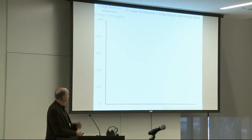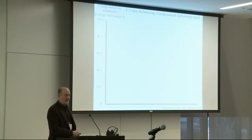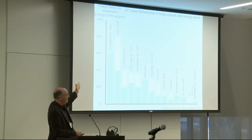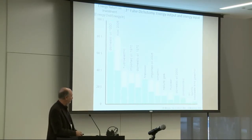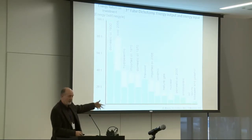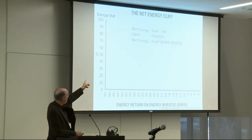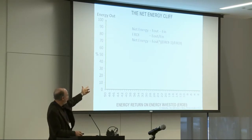The third false dichotomy is energy output versus energy input. There's a popular measure called the energy return on investment — simply energy output over energy input. Data for different energy technologies shows that domestic U.S. oil in 1930 had an energy return on investment of about 100: it was very easy to get your hands on that energy. The technologies we're looking to as the future have a way lower energy return on investment. Net energy is defined as energy out minus energy in, and the energy return on investment is just one divided by the other.